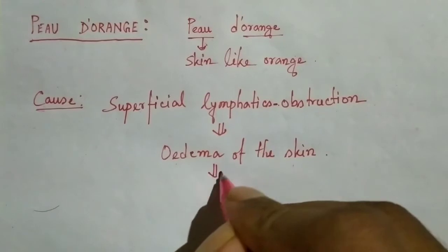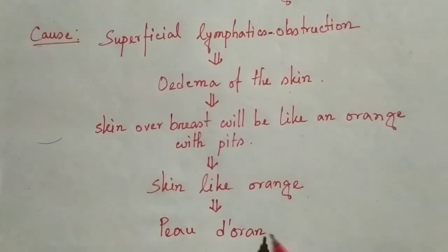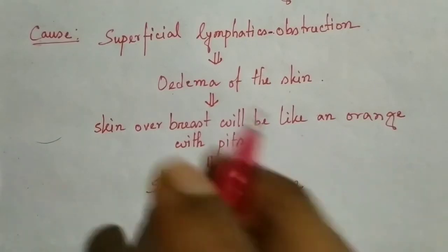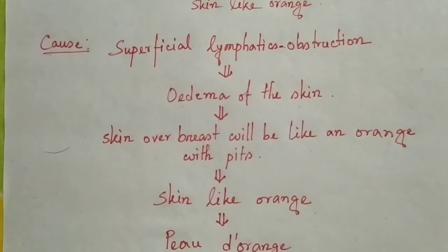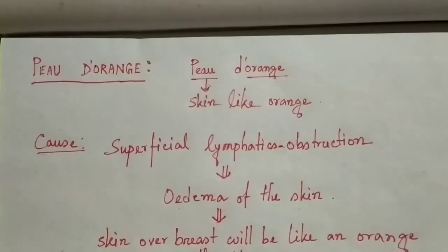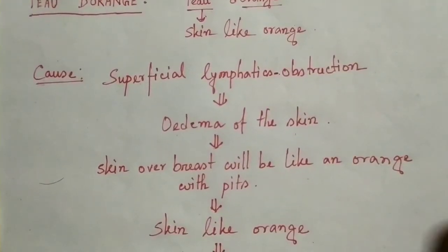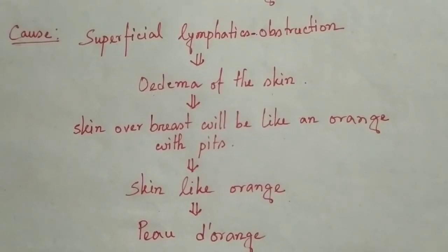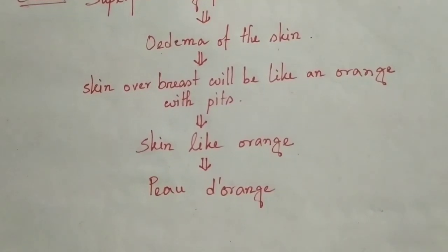Due to edema of the skin, the skin over the breast will look like an orange with pits — this is basically peau d'orange. 'Peau' means skin and 'orange' means like orange — they are separate French words. The cause of superficial lymphatic obstruction is mainly cancer.